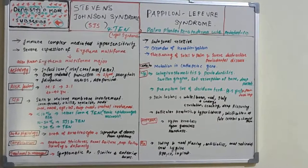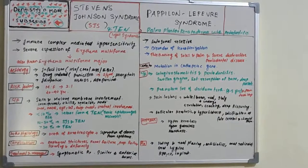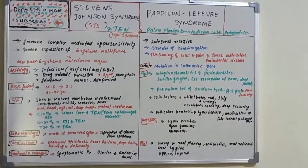Regarding body surface area involvement: if less than 10% is involved it is considered Stevens-Johnson syndrome (minor form); 10–30% involvement is considered an overlap of Stevens-Johnson syndrome and toxic epidermal necrolysis; and greater than 30% body surface area involvement is classified as toxic epidermal necrolysis, which is the severe form.